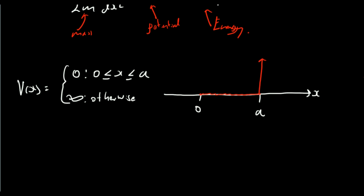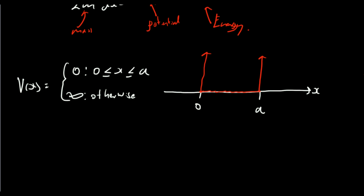The potential shoots up to infinity outside this region. A particle of finite energy can't exist in a region of infinite potential, so those two regions are basically forbidden — the particle can't exist there. But it's perfectly happy to be in the region in between, so it's confined between zero and a. Because the particle can't exist outside this region, the wave function must be equal to zero outside it, but inside is just some finite function.